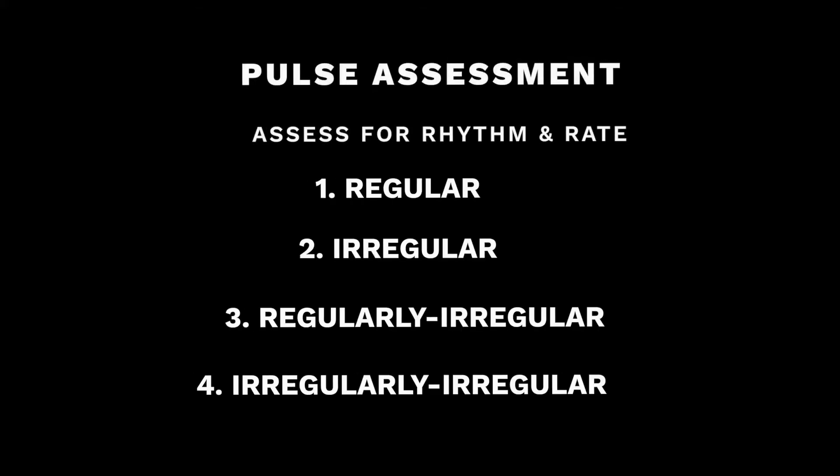When we assess a pulse, we want to assess for a couple of things. We want to assess for the rhythm and the rate. Pulses can be described as regular, irregular, regularly irregular, or irregularly irregular. Normally you want to count for one minute. You can count for 30 seconds, but it's best to count for one minute, especially if you're barely learning about your patient. Once you are familiar with your patient and you know that they have a regular heartbeat, then it's easier to assess for 30 seconds. And for our apical pulses, we will listen for one minute.